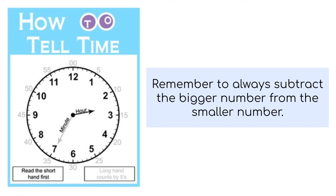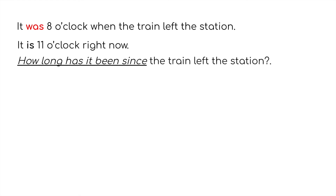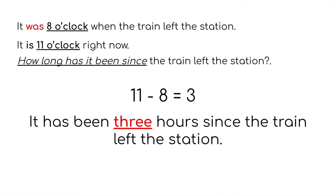On your quiz you will have a question like this: 'It was 8 o'clock when the train left the station. It is 11 o'clock right now. How long has it been since the train left the station?' It's 11 o'clock now, it was 8 o'clock when the train left — 11 minus 8 is 3. It has been 3 hours since the train left the station. You'll also need to draw a clock, so make sure you know how to draw a clock for the correct times.